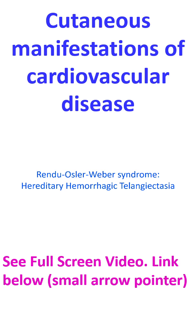Iron overload in Hemochromatosis can cause a tanned or browned skin. Hemochromatosis can also cause cardiomyopathy, heart failure and complete heart block.